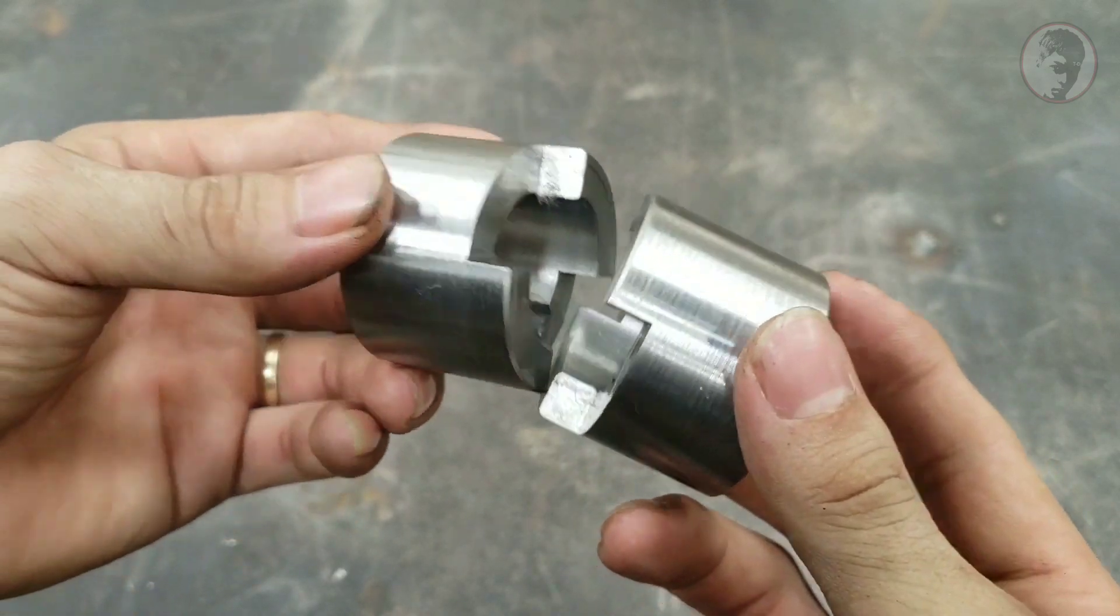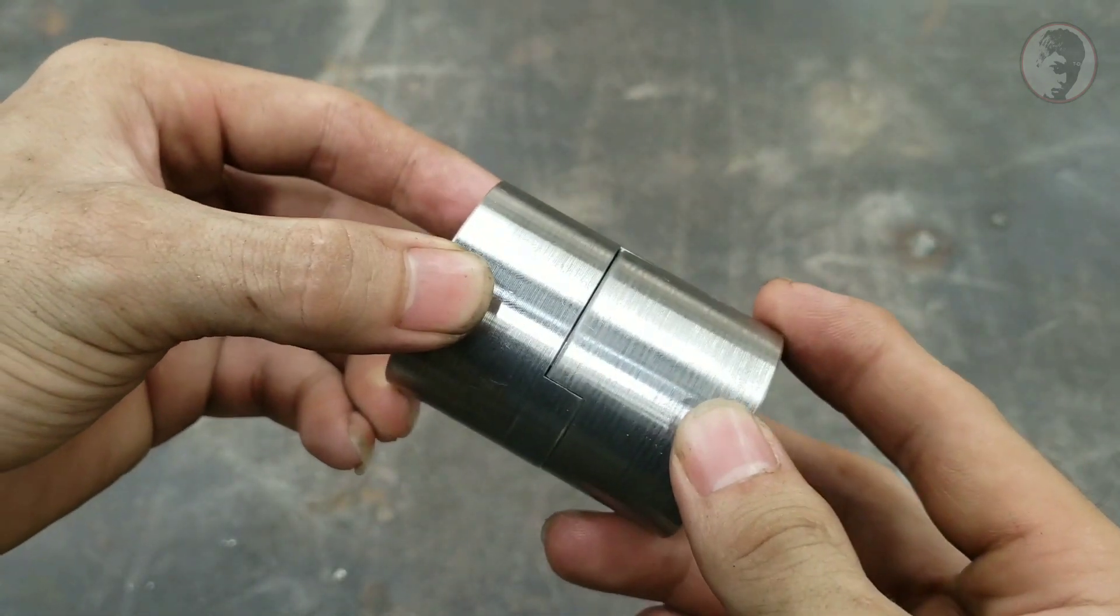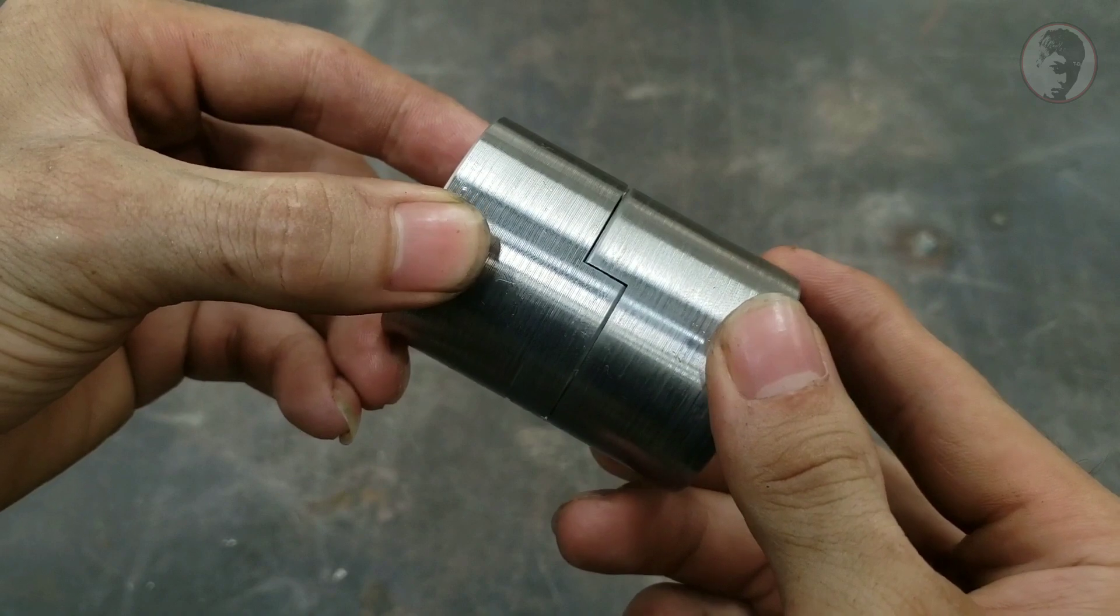Sau khi phai xong mình đã sọc thêm 2 rãnh chốt, như vậy khớp nối của mình đã hoàn thành. Hy vọng qua video này các bạn sẽ biết thêm về cách chia cũng như là cách phai khớp nối.